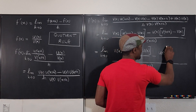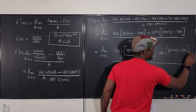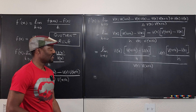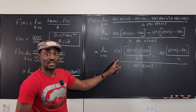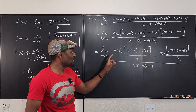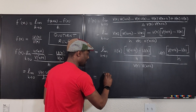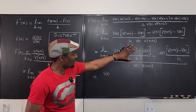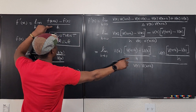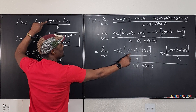What do I have now if I take the limit? I can introduce the limit to each term as long as each limit exists and the functions are continuous. The limit of v of x as h goes to zero is just v of x. The limit of [u of x plus h minus u of x] over h as h goes to zero — that is exactly the definition of the derivative, so it equals u prime of x.